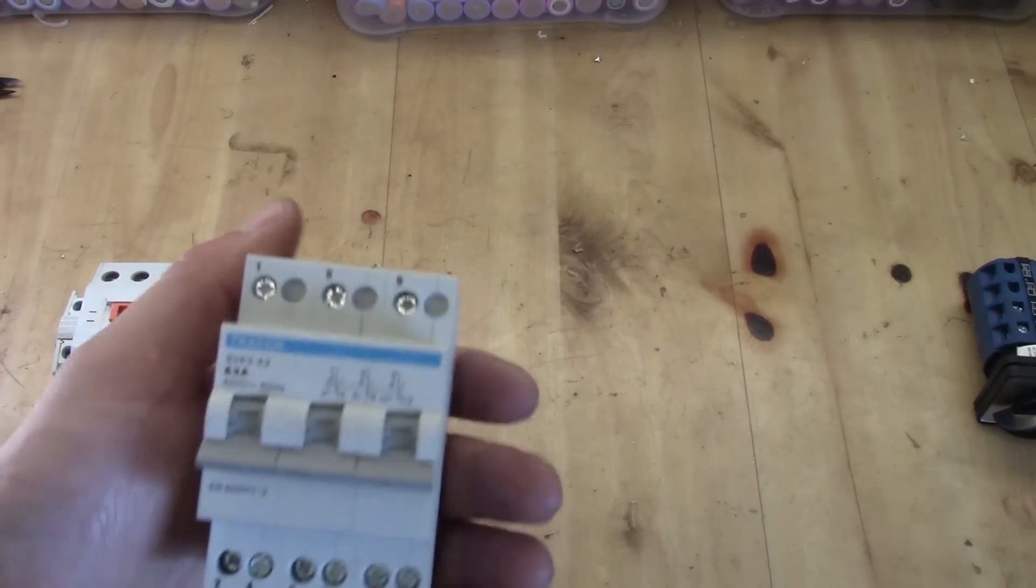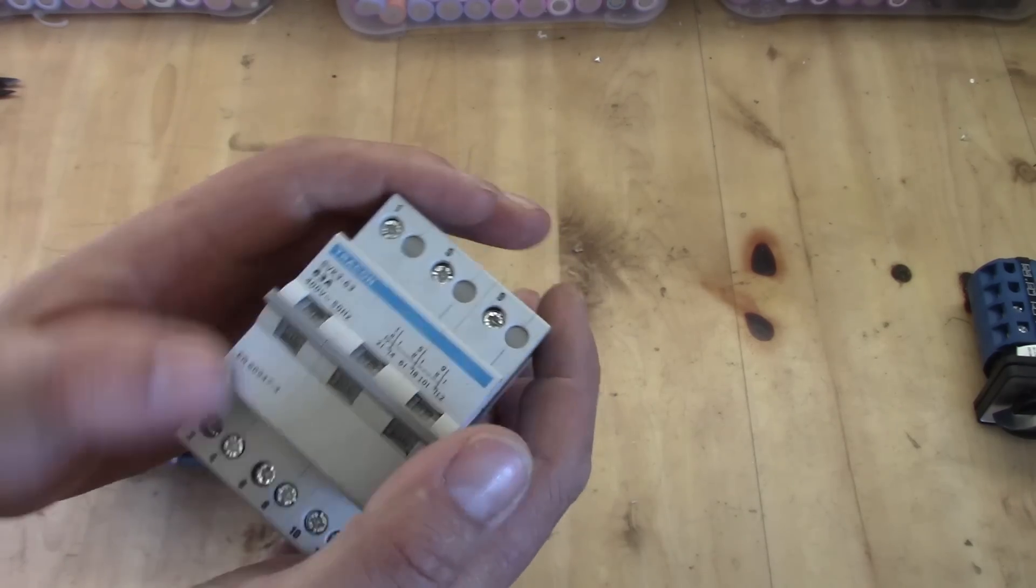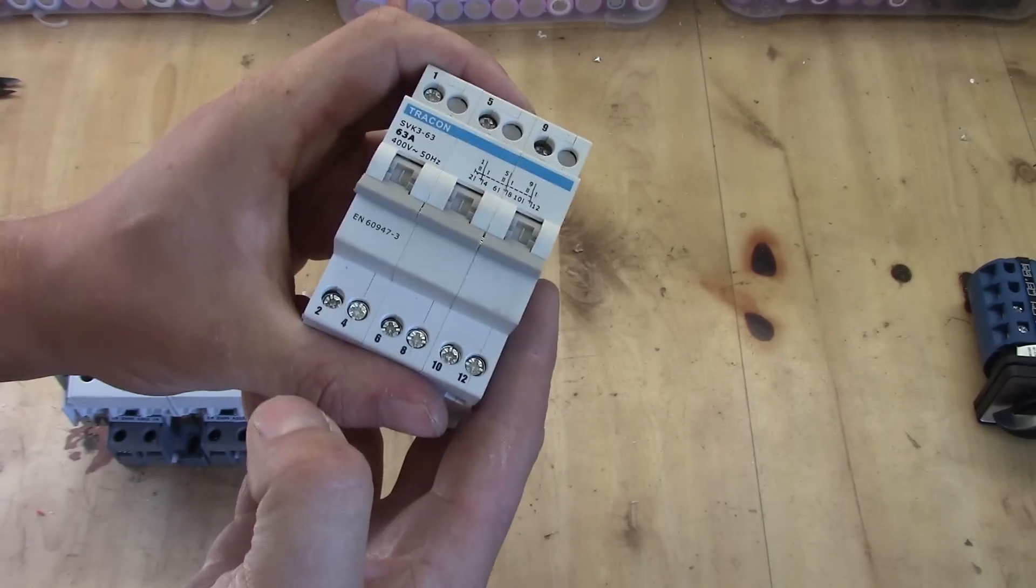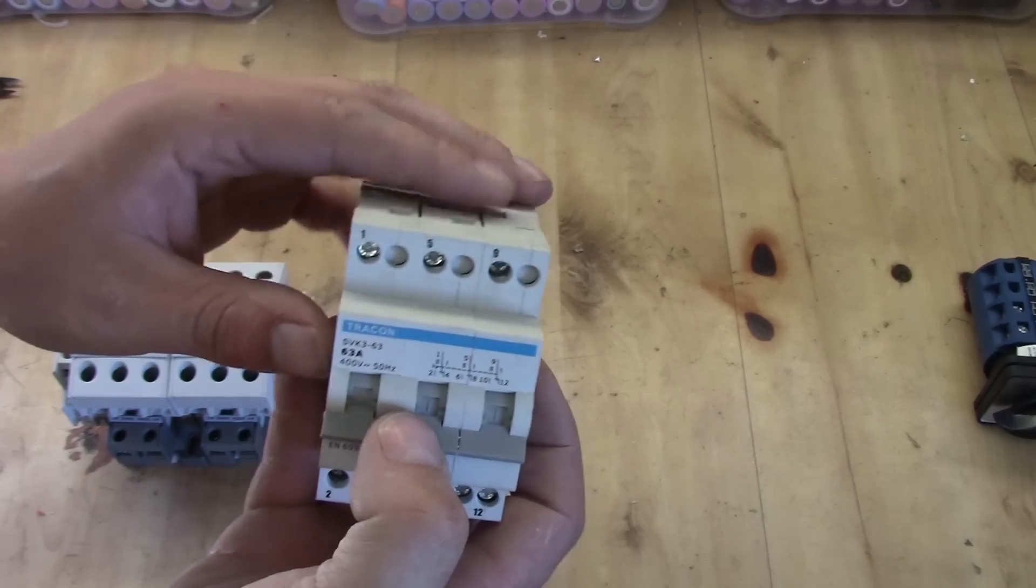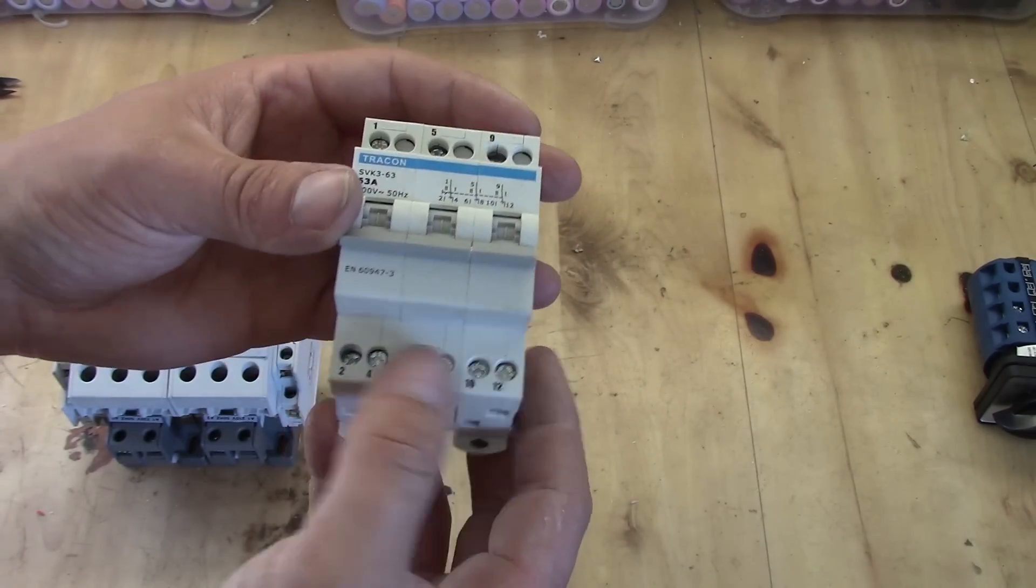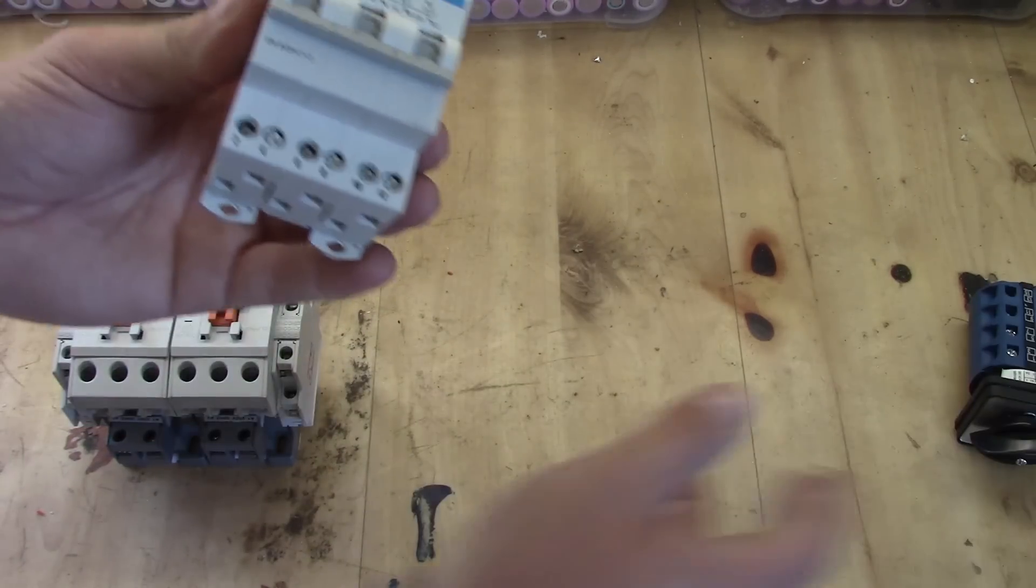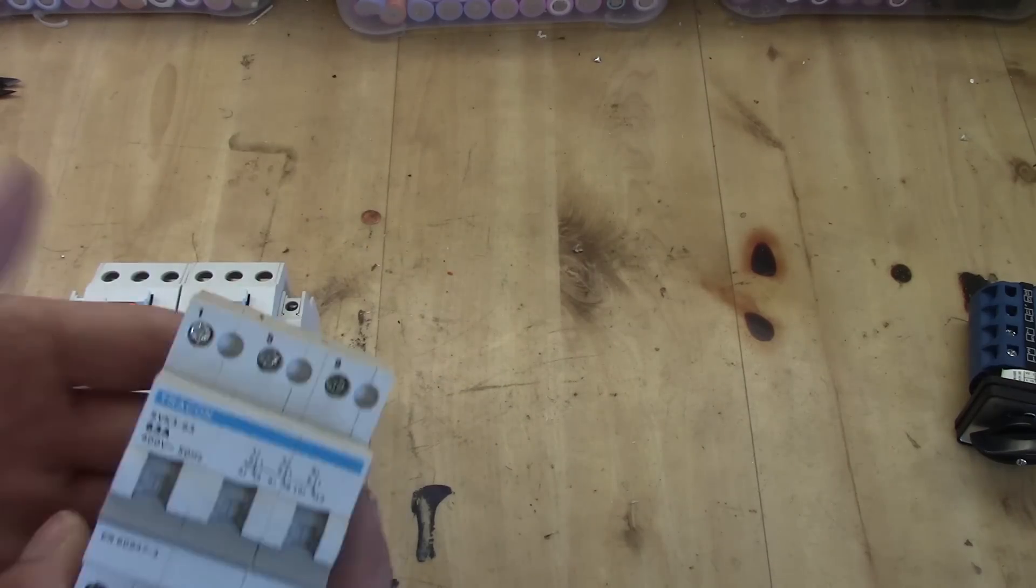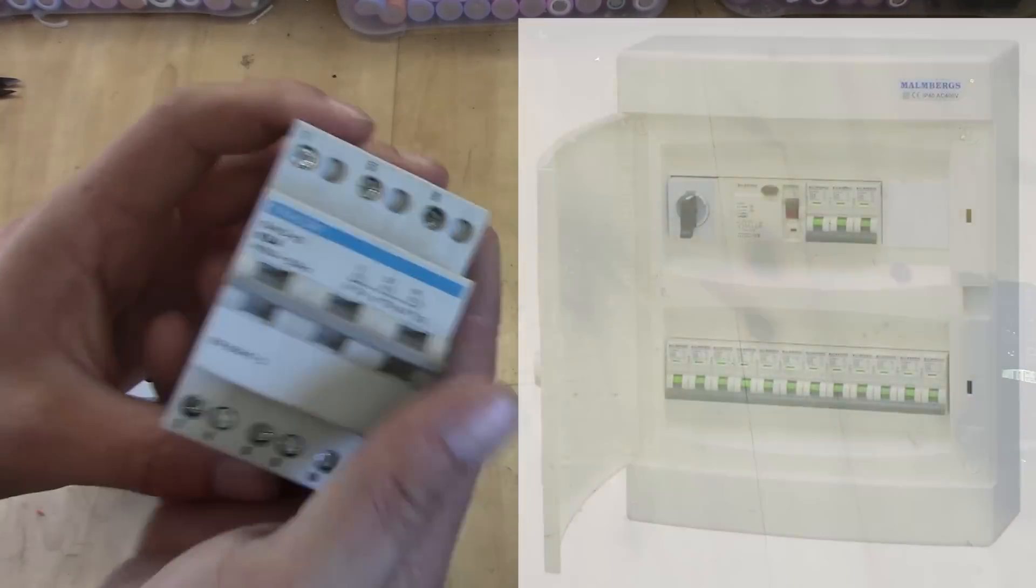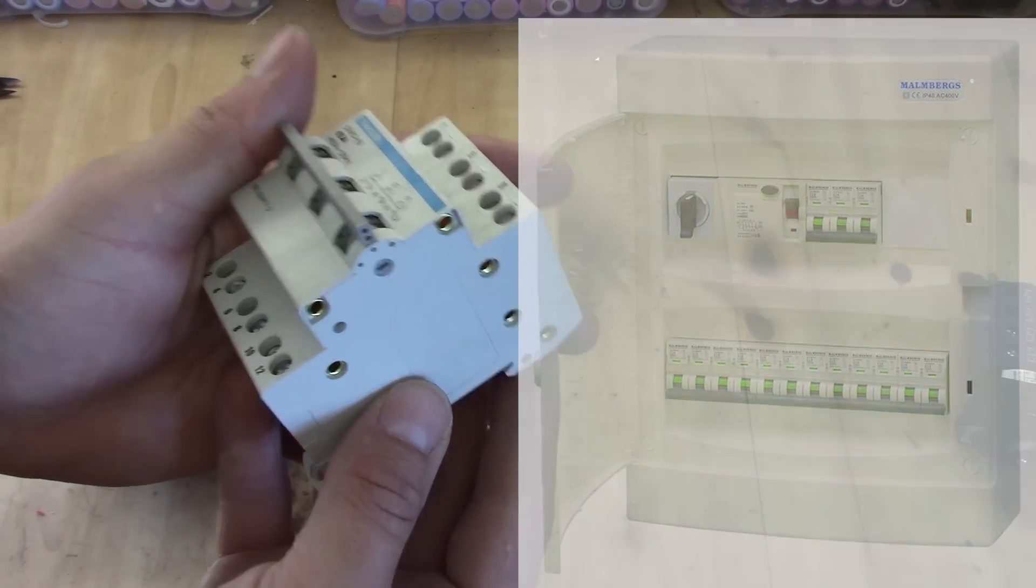The second one is the DIN mounted or the norm mounted version. This is the same as the first one. You have the zero in the middle, two in the top, one in the bottom. You have your three phases incoming on the top and the three phases outcoming on the bottom. This is just a three pole switch instead of this one that had four poles. So depending a little bit on your load, this one can be used instead. And the beauty about this one is that it fits into your normal DIN or norm central for your fuses or breakers. So that's really good.